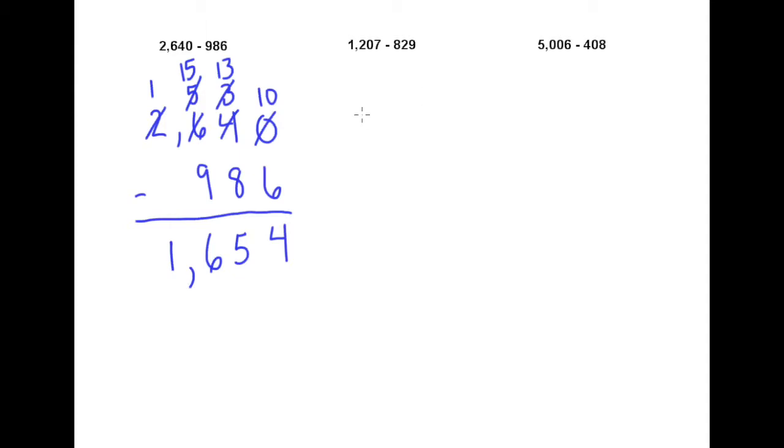This next example shows a tricky thing that can come up when you're subtracting numbers. We'll take 1207 minus 829.